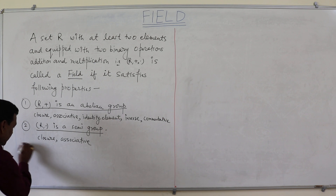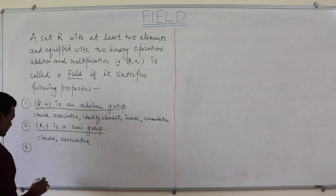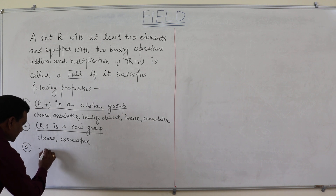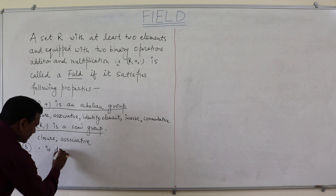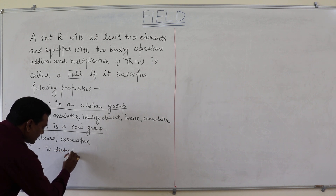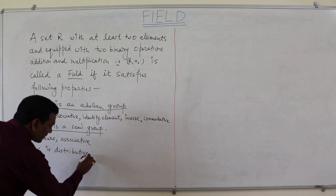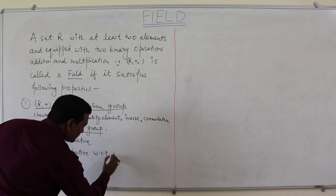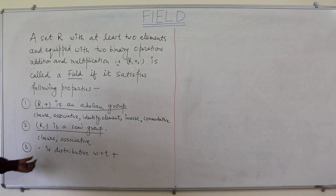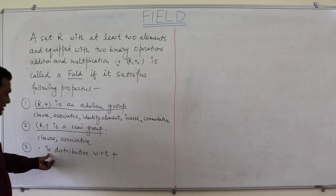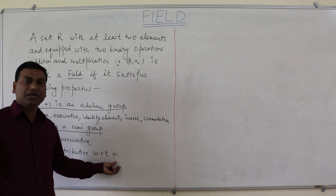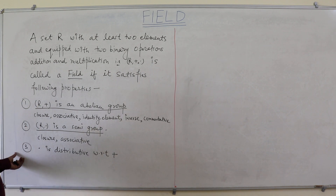Third property: multiplication is distributed with respect to addition. That is, multiplication is distributive over addition. This is the third property.